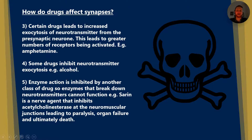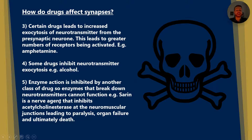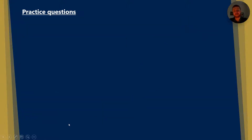Another category of drugs will inhibit enzyme action — this class stops enzymes from breaking down neurotransmitters. For example, sarin is a nerve agent that inhibits acetylcholinesterase at the neuromuscular junctions, and this can lead to paralysis, organ failure, and death. Let's go through some practice questions to embed this learning.